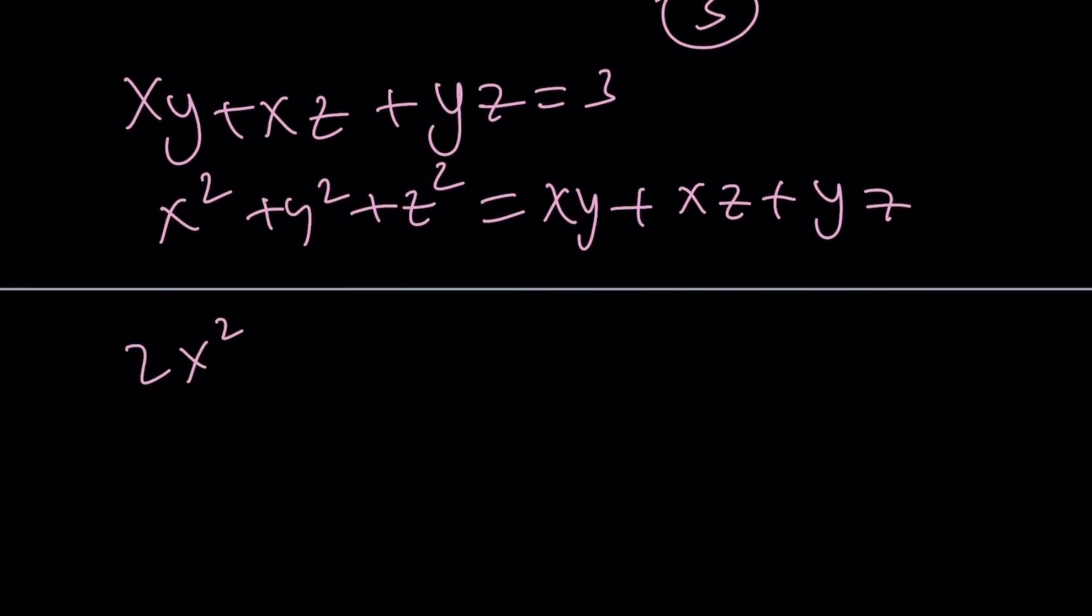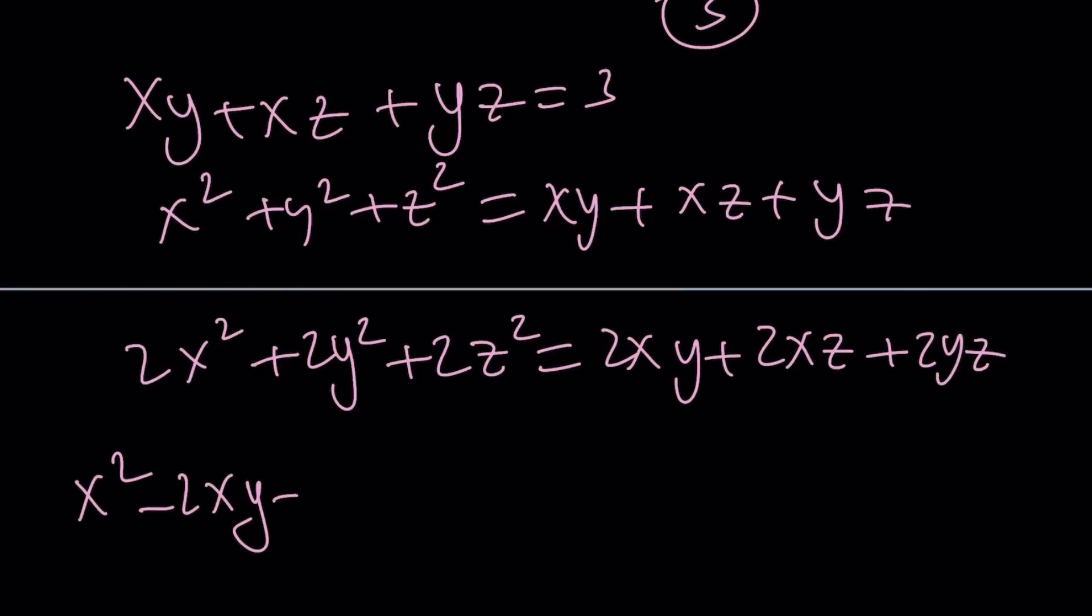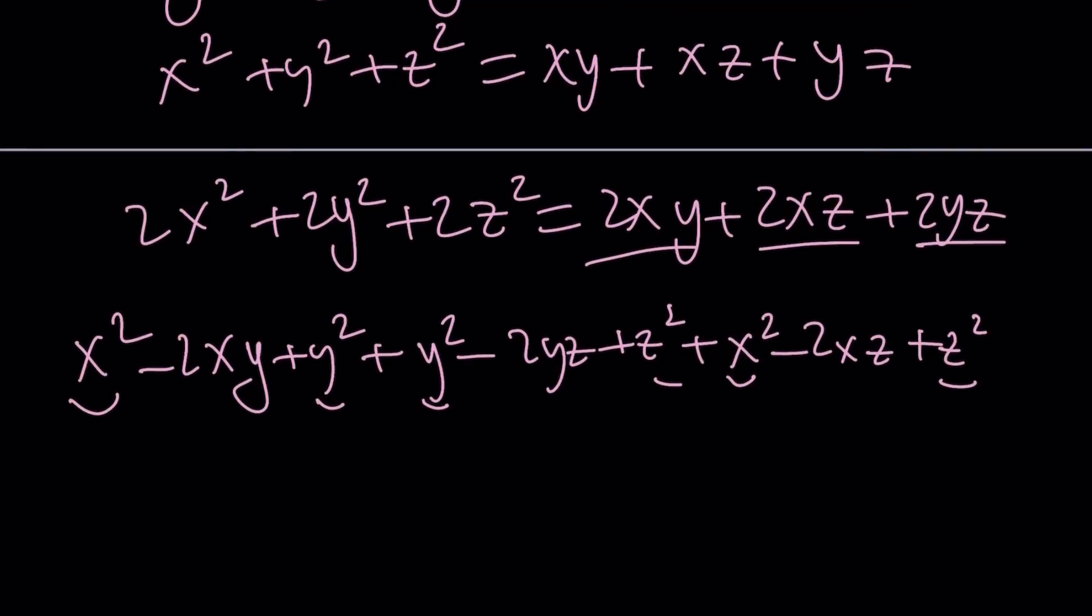We're going to get something like this. Let me keep a long story short: x squared minus 2xy plus y squared plus y squared minus 2yz plus z squared plus x squared minus 2xz plus z squared. So I split up the x squared into two pieces, y squared into two pieces, and z squared into two pieces. The minus 2xy minus 2xz minus 2yz all stay the same. This equals 0.